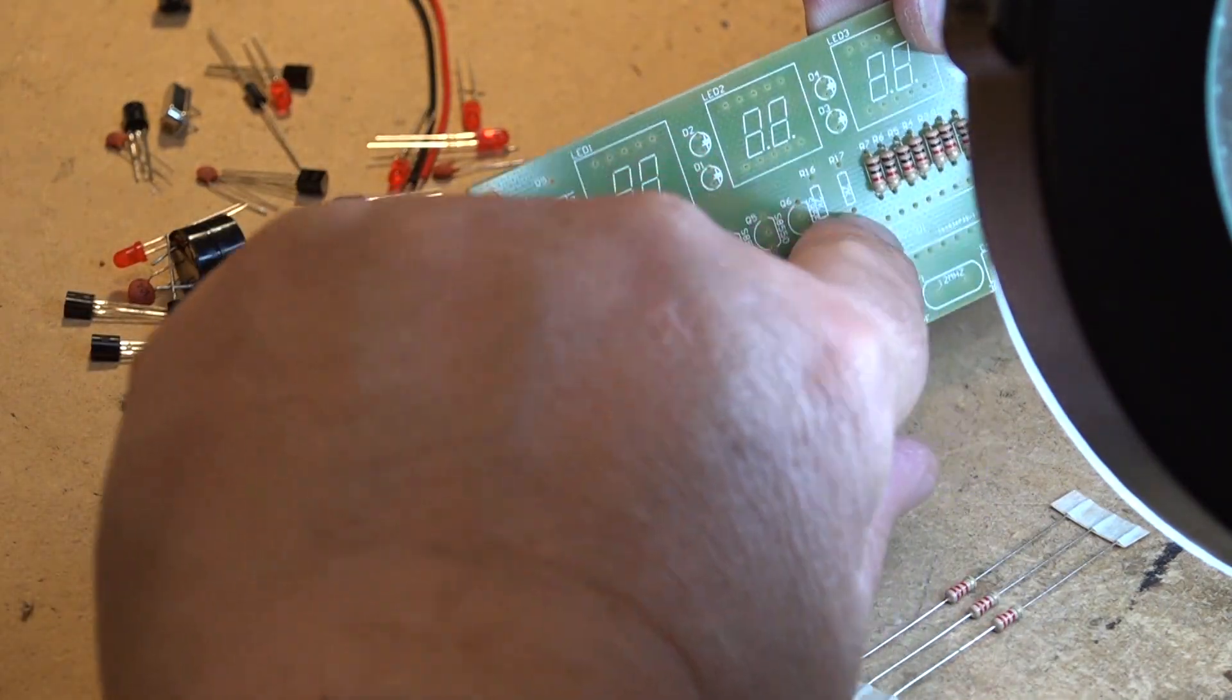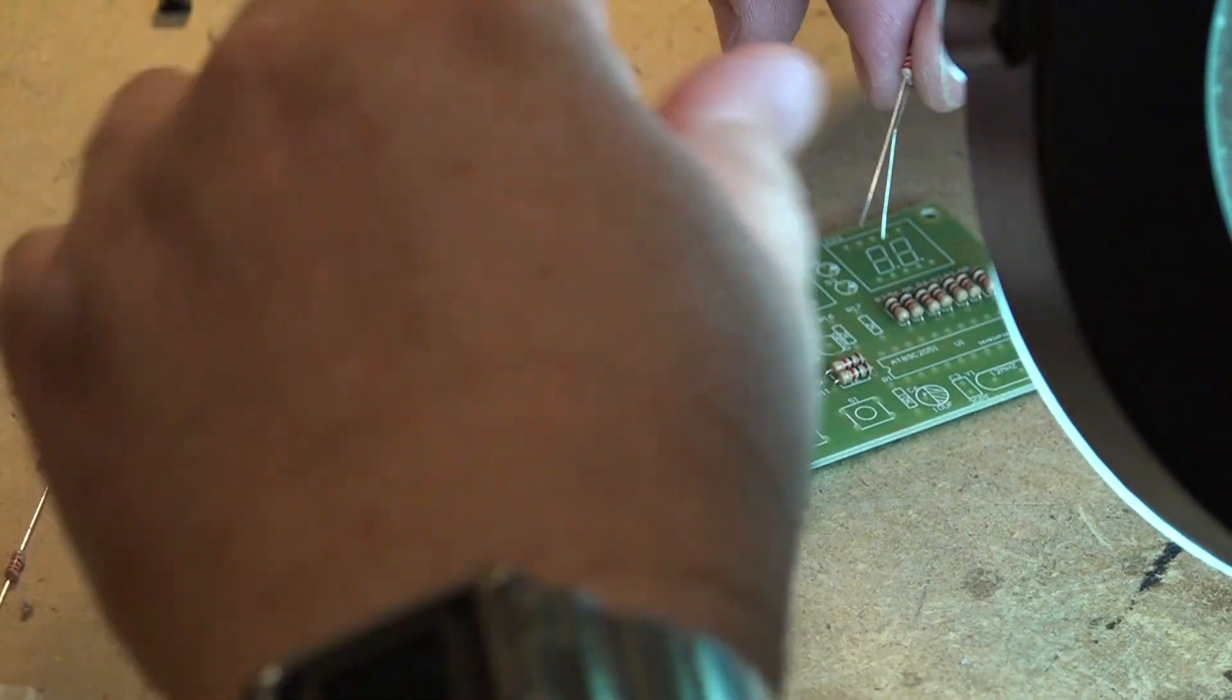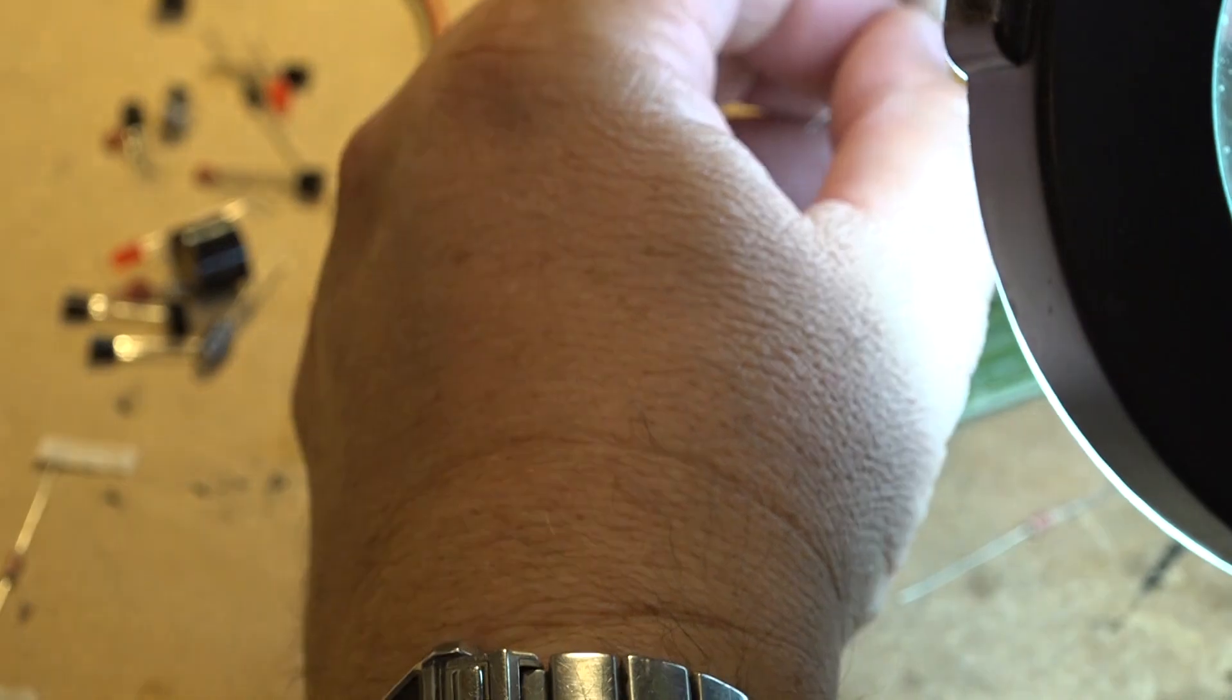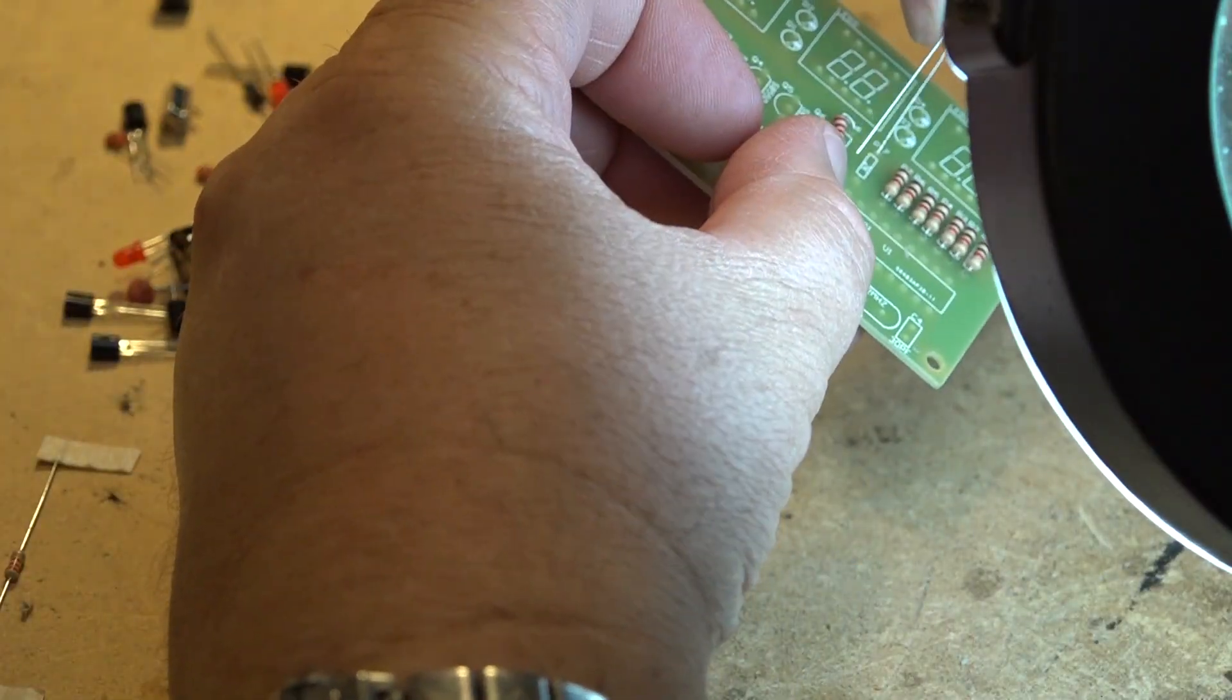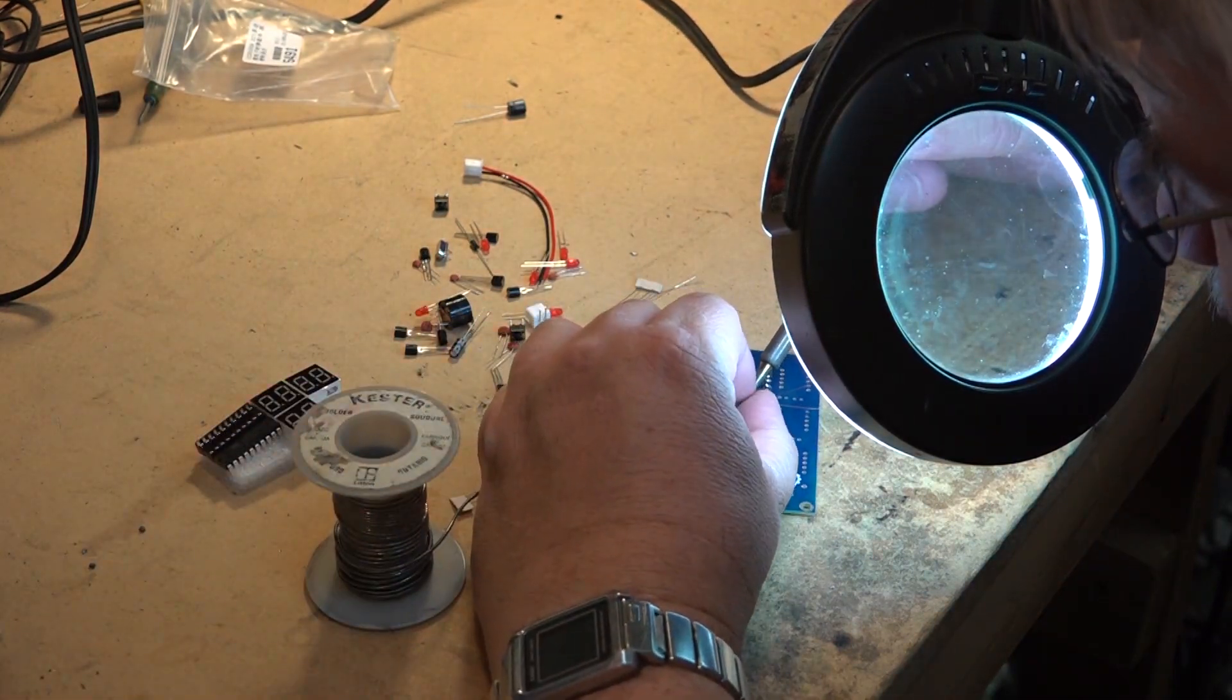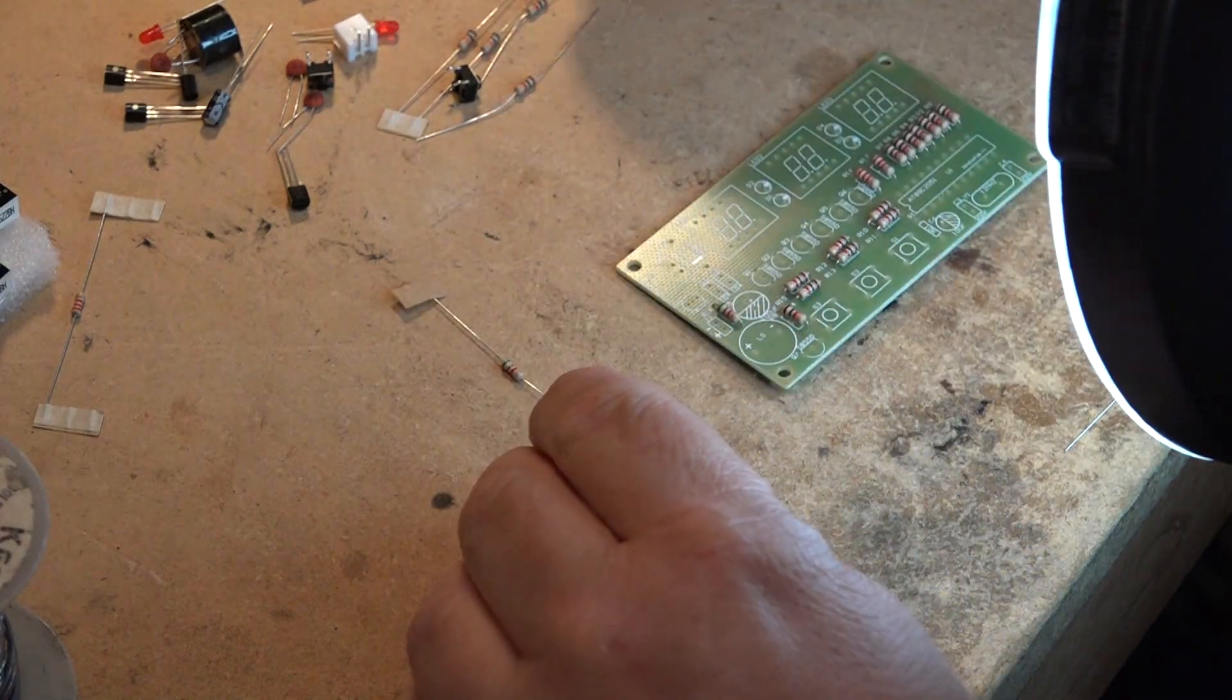I'm going to mount the 2.2k resistors where they're marked 2k, because either they changed the part value or misprinted it on the board. Next goes in the 5.1k resistor and the 10k.